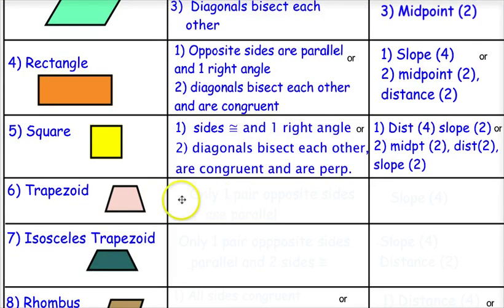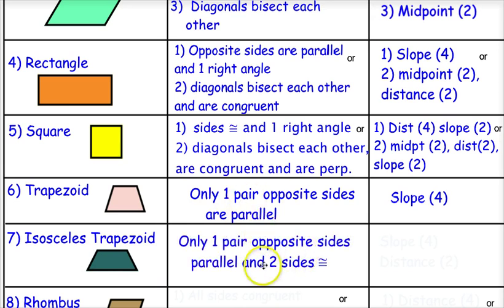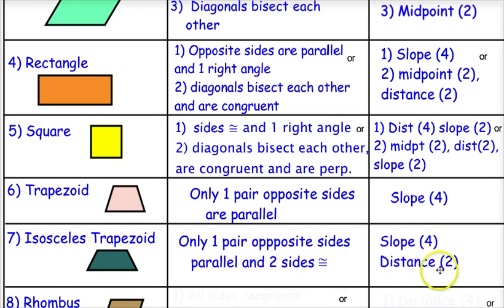A trapezoid has two sides parallel and two sides not parallel, so I have to show only one pair of opposite sides is parallel using the slope formula four times — the parallel pair has the same slope — and show the other two sides are not parallel. For an isosceles trapezoid, after proving it's a trapezoid, I also need to show the two legs are congruent to each other, so I use the slope formula four times and the distance formula twice.